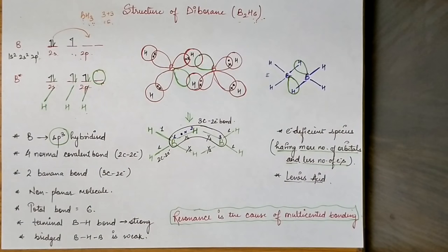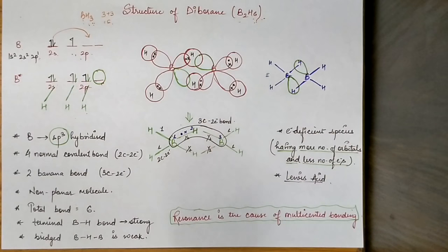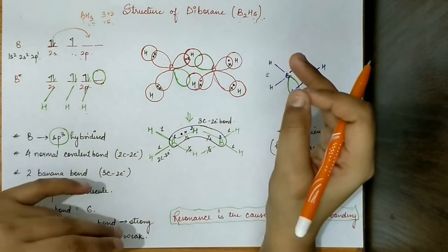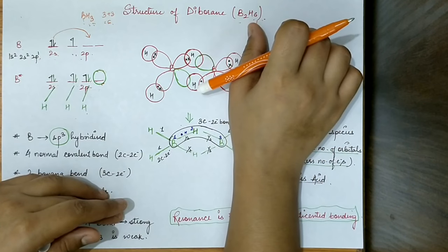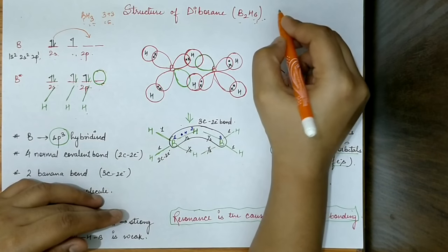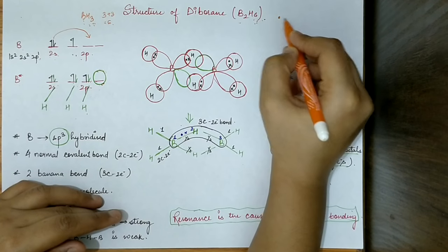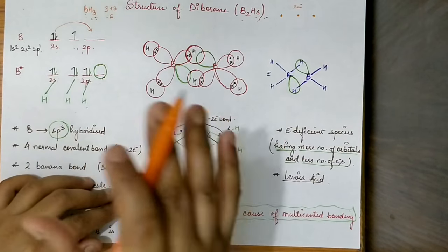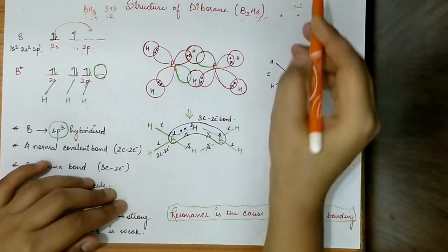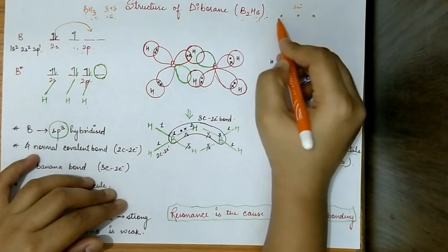This is an electron deficient molecule because boron has a deficiency of electrons. Therefore we have another type of bonding here, known as multi-centered bonding. Multi-centered bonding occurs when there is a deficiency or excess of electrons. Just like ionic bonds and covalent bonds, multi-centered bonding is a concept where the number of centers and electrons determines the type of bond.